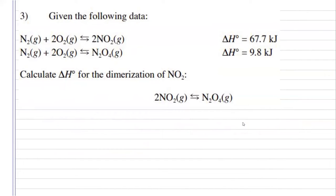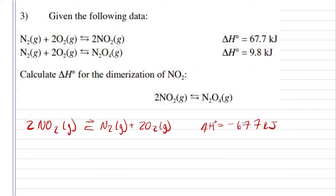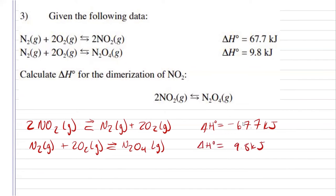For 3, we are given the 2 reaction steps for the dimerization of nitrogen dioxide. Here we are going to have to flip some reactions in order to get our final one. Looking at what we're given, I have the nitrogen dioxide as a product in the first reaction, and I know that I'm going to have to flip that reaction, allowing me to have my nitrogen dioxide as one of my reactants. By doing that, my enthalpy instead of requiring 67.7 kilojoules will release 67.7 kilojoules. With the second step, since my dinitrogen tetraoxide is on the product side, I don't have to do anything to it, so I'm just going to bring that down, and my enthalpy for that one is just going to stay the same, 9.8 kilojoules.